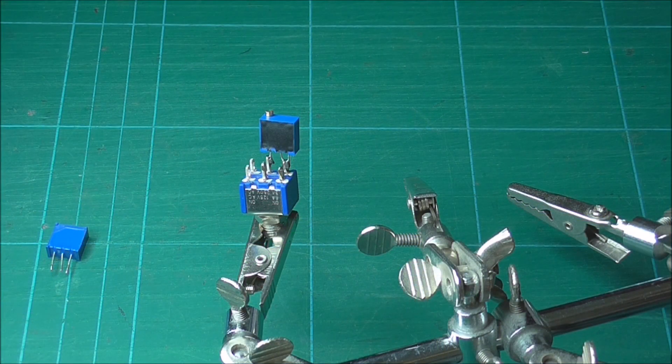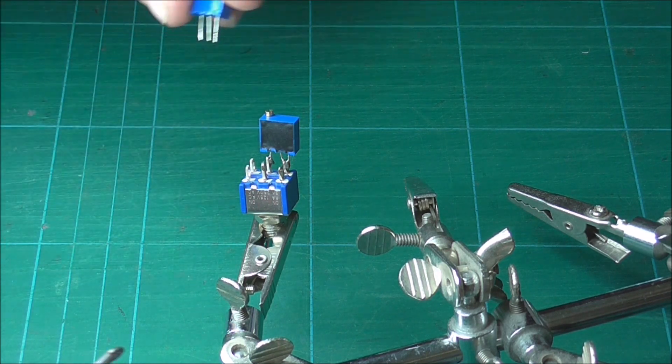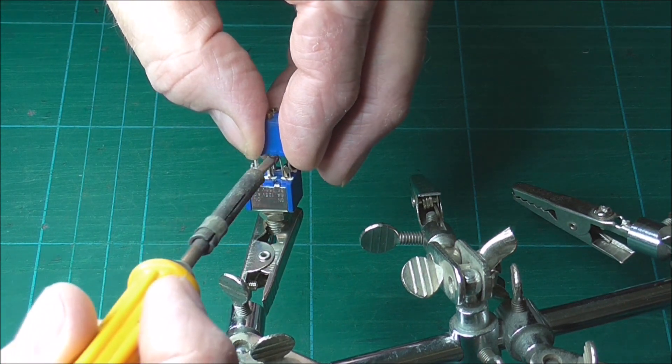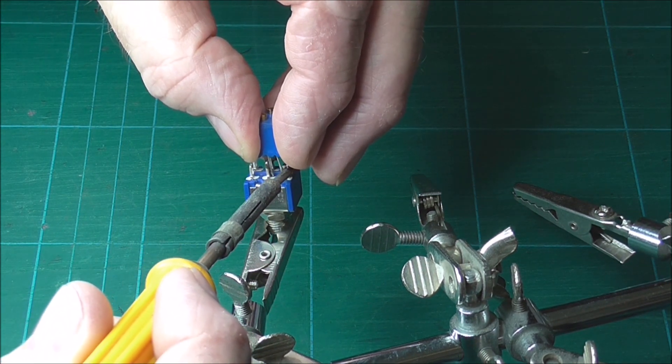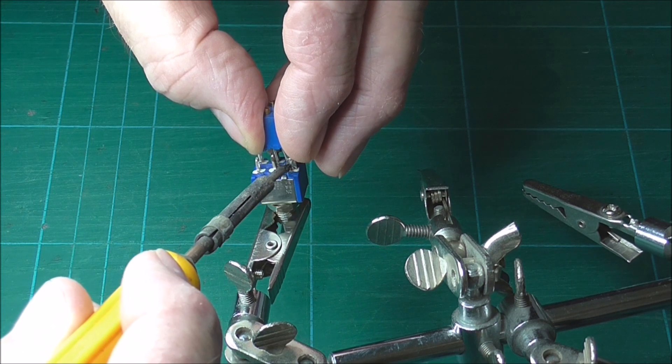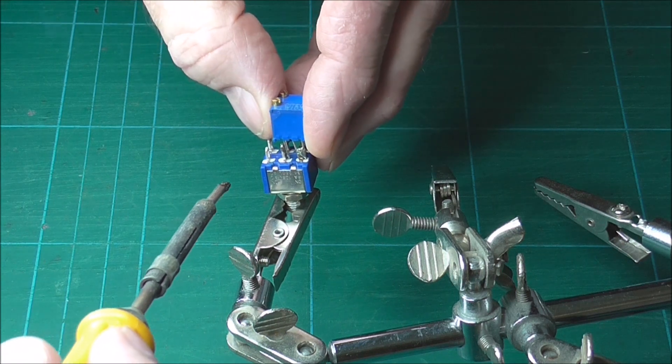Solder the preset to the switch. The single wire directly underneath the small screw adjuster goes to the centre of the switch and the other two wires solder to the right-hand section of the switch. Do not put excessive heat on the components as it may damage them.